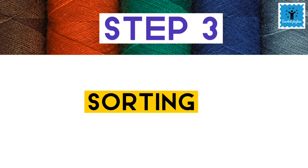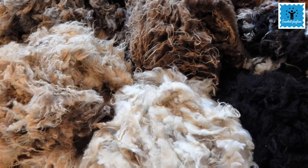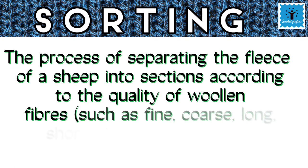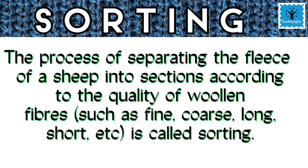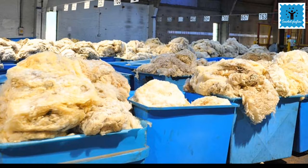The third step is sorting. The fleece of a sheep has different textures such as long, short, fine, or coarse. After scouring, sorting is done — the hairy skin is sent to a factory where hair of different textures are separated. Hair are kept in different sections and each section has the same quality of hair.